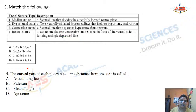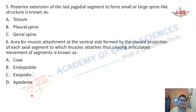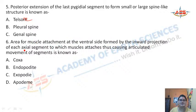Question descriptions: (A) Ventral line that divides the anteriorly located Rostral plate. (B) Two ventrally situated depressed lines that isolate Hypostom and Rostrum. (C) Ventral lines that separate Hypostom from Rostrum. (D) Sometimes the two connective sutures meet in front of the ventral side forming a single depressed line. Question 4: The curved part of each pleuron at some distance from the axis is called — articulating facet, fulcrum, pleural angle, or apodeme. Question 5: Posterior extension of each Pygidial segment to form a spine-like structure is called — Telson, pleural spine, or genal spine. Question 6: Area for muscle attachment at the ventral side formed by inward projection of each axial segment — Coxa, Endopodite, Exopodite, or Apodeme.